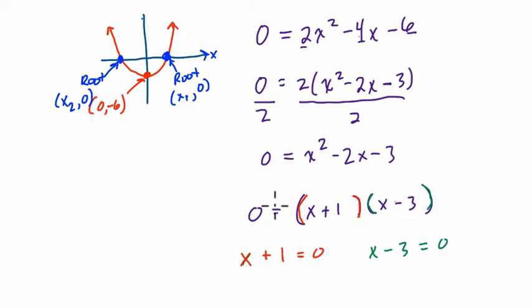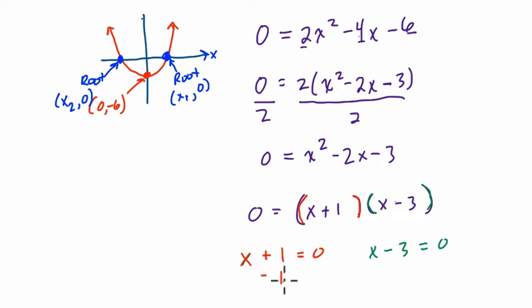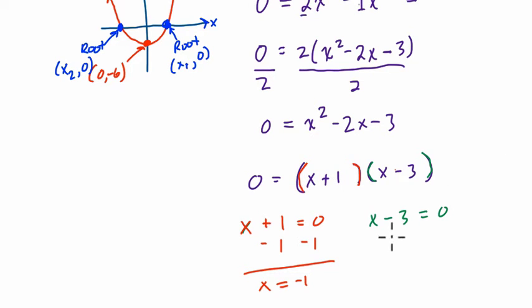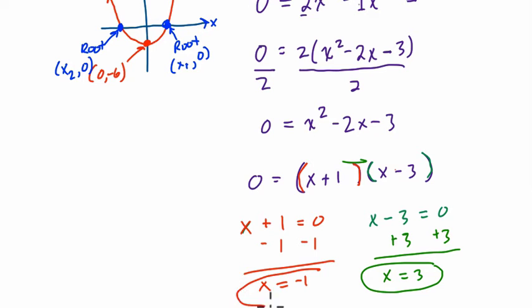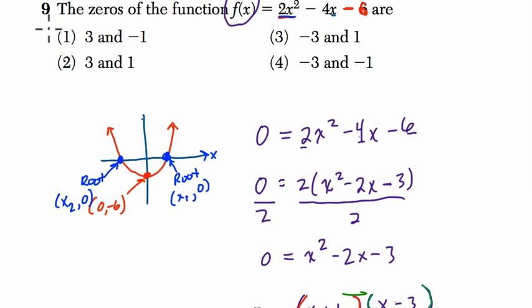We find the x values that make each factor 0 so the total product is 0. For the first factor, x equals negative 1 — if x is negative 1, then negative 1 plus 1 is 0, and the whole product is 0. For the second factor, we add 3 to both sides, so x equals 3 — because 3 minus 3 is 0, and the whole product is 0. So the two zeros of this function are x = 3 and x = -1.